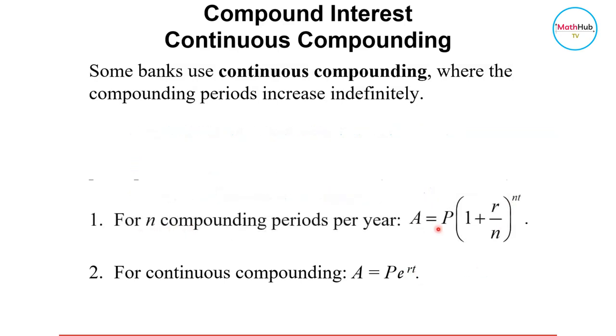This is the formula for n compounding periods, where n is the number of times the interest is applied per year.